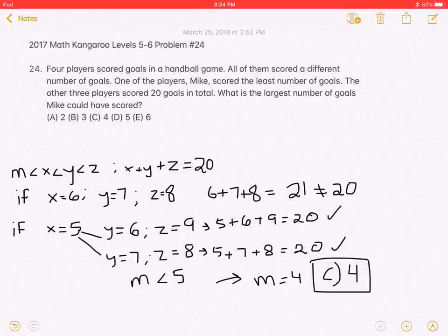The sum 6 plus 7 plus 8 is 21, which is greater than the sum of 20, which was stated in the problem. Therefore, X must be less than 6.